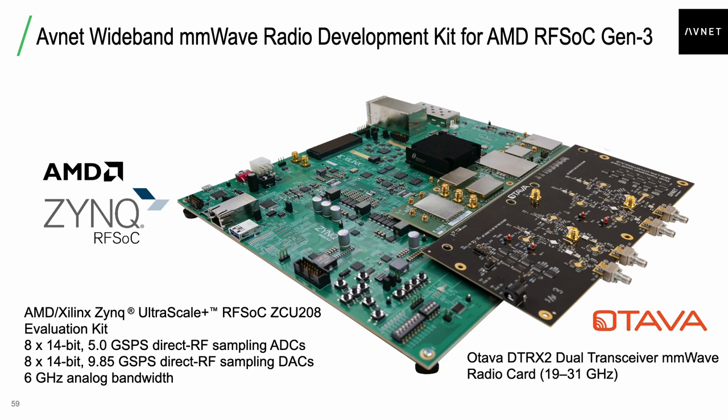Back to this block diagram, I'm going to talk about the blocks on the left, namely the RFSOC from AMD, formerly Xilinx. This is the baseband we've been discussing. It is an evaluation board from AMD, namely the ZCU-208, which has an 8-channel ADC, 8 channels of DACs, sampling at 5 gigasamples per second for direct RF sampling, and up to 9.85 gigasamples per second on the DACs with a 6 gigahertz analog bandwidth.